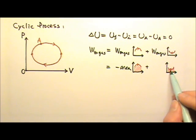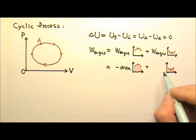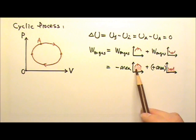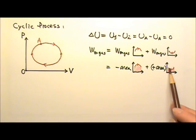If the volume decreases, the work done is the positive area. If you add the negative area of this part to the positive area of this part, what do you think you get?